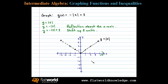We'll follow these points as we reflect them about the x-axis. The point (1, 1) on the basic graph will get reflected to (1, -1), and (2, 2) will be reflected to (2, -2). Now we can graph y = -|x|.